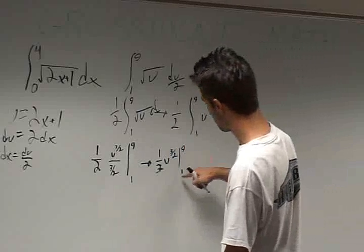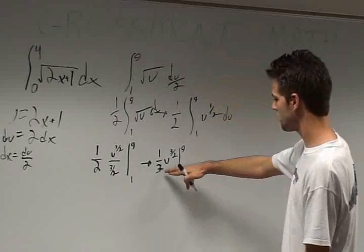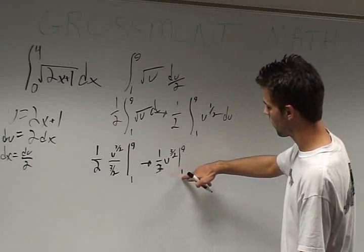To evaluate this, we plug in the limits. We get 1 third times 9 to the 3 halves minus 1 third times 1 to the 3 halves.